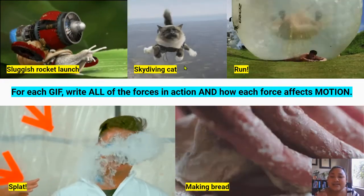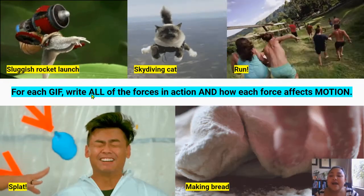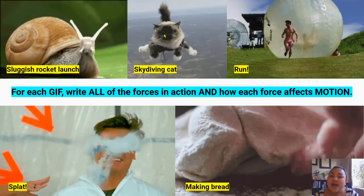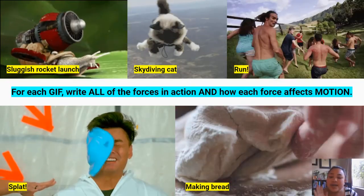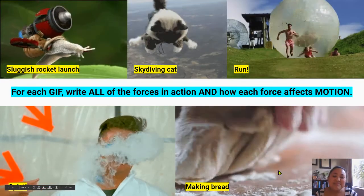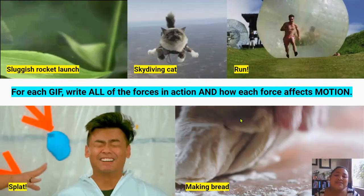Okay? So you don't need to be as thorough as that, but I would like you to write as many forces as you can think of that are acting on the skydiving cat, this running man, splat boy, and making bread, and write how each force affects its motion.